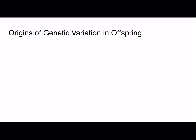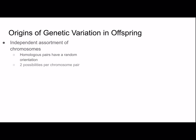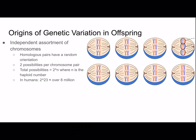Now let's talk about more origins of genetic variation. There is independent assortment of chromosomes, meaning homologous pairs have a random orientation. There are two possibilities per chromosome pair, and the total number of possibilities is 2 to the nth power, where n is the haploid number. In humans it's 2 to the 23rd, which is over 8 million. For 6 chromosomes with a haploid number of 3, we get 2 to the 3rd — 8 combinations. Independent assortment is basically the order of chromosomes; there are two options for each pair.